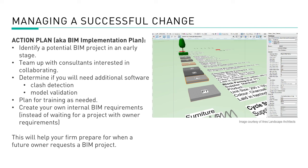The action plan — sometimes referred to as the BIM implementation plan. In this plan, identify a project in its early stage for its first BIM exercise. Your firm could also team up with the consultants you expect to collaborate with, and determine if you need additional software — for example, clash detection and model validation. These can be helpful for landscape projects built on structure or co-mingled with other site infrastructure work. Plan for the necessary training, and be sure to create your own internal BIM requirements, because this plan will help your firm prepare for future BIM project requests.